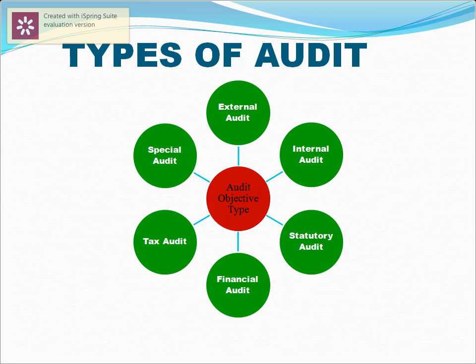Now, we will look at the generalized types of audit. External audit is performed in accordance with the laws and rules specified. Internal audit is performed to improve the organization. Statutory audit is an examination of an entity's financial records in accordance with the requirements of a government agency, covering financial reports and the financial reporting process. Tax audit is where a tax officer assesses the tax return. Lastly, special audit is done to audit a specific area in the business.